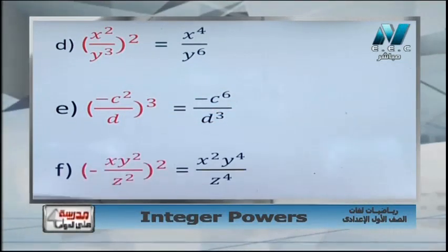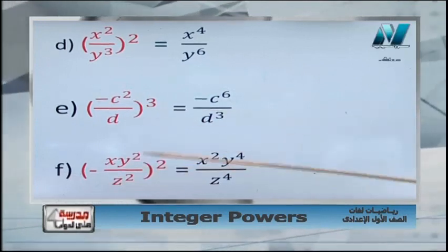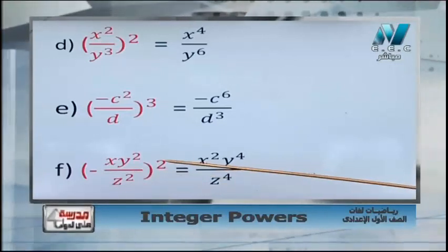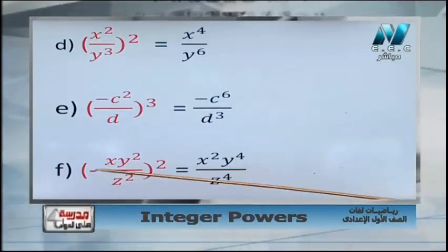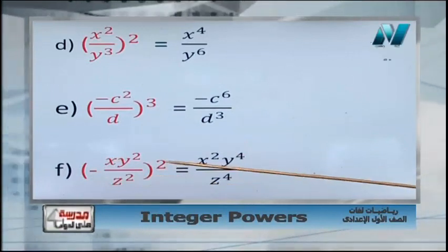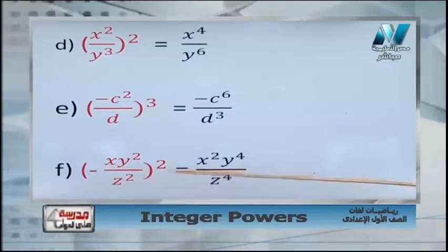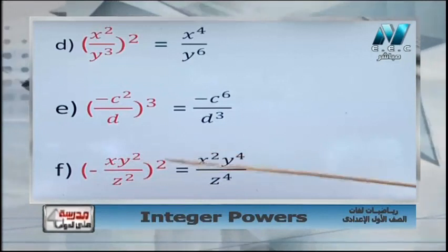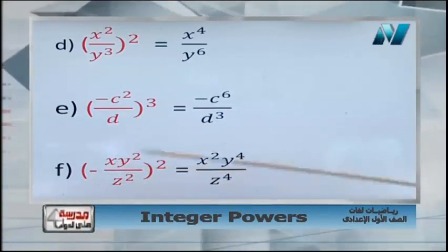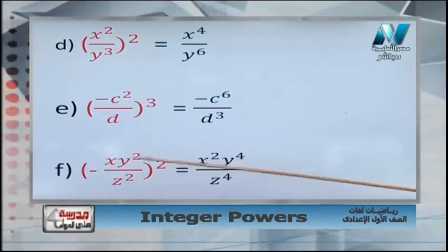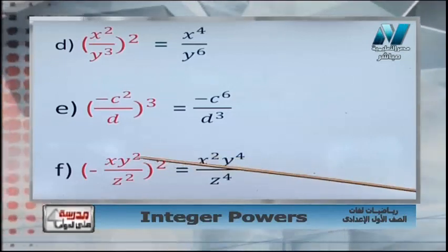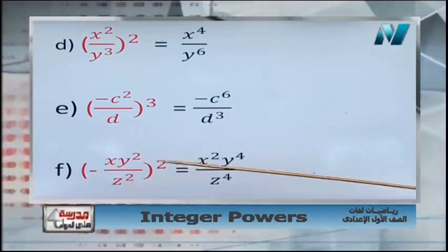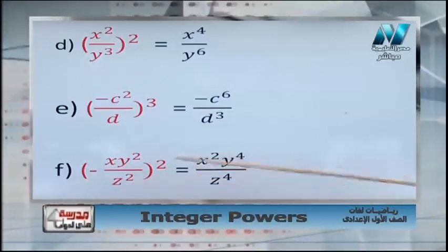The last one: negative x y power 2 over z power 2, all to the power 2. Here we have a negative sign and an even power. Even power cancels the sign — the sign disappears. Then distribute 2 over x, over y, and over z. Distributing 2 over x gives x power 2. Distributing 2 over y power 2: power of the power, 2 times 2 equals 4. For the denominator, z power 2: 2 times 2 equals 4. Result: x power 2 times y power 4 over z power 4.